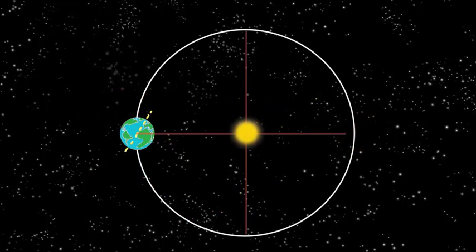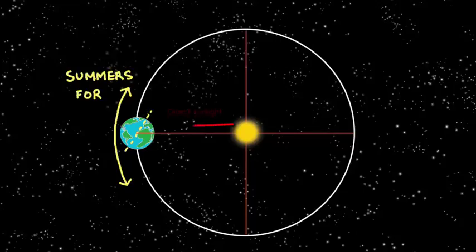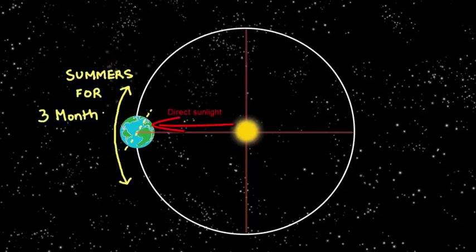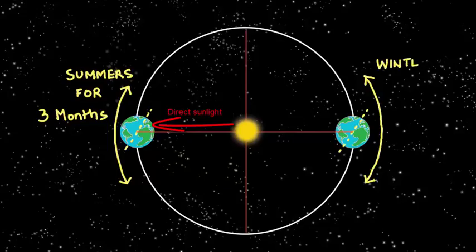As we saw in the earlier video, the cause of the season is the tilt of the earth of 23.5 degrees. So at some point in time, when sun rays fall more directly over Northern Hemisphere than Southern Hemisphere, the Northern Hemisphere has summers while the Southern Hemisphere has winters.